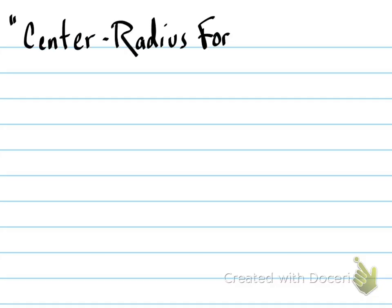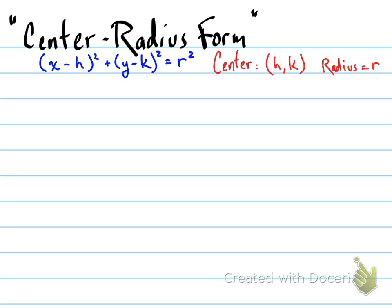First off, I think it's good to remind ourselves what center-radius form is and what it tells us. That's what it looks like: x minus h squared plus y minus k squared equals r squared. It gives us the center coordinates of the circle hk and the radius r.